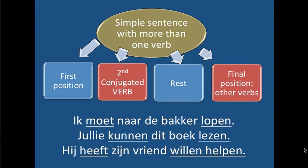Let's go to the simple sentence with more than one verb. First position, second position is the conjugated verb — that's the verb that we saw in the simple sentence with one verb. This is the verb that follows the subject. So if the subject is 'ik,' then it will have the 'ik' form of the verb, and we call that the conjugated verb. Then you have the rest, and in final position are the other verbs. So you can clearly see there are two fixed positions for verbs in a simple sentence: second place for the conjugated verb, and final position for all other verbs.